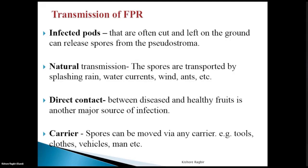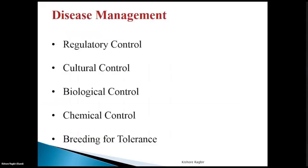There are five points for disease management: regulatory control, cultural control, biological control, chemical control, and breeding for tolerance. Regulatory control is one of the main ones for managing disease — particularly for preventing the disease from coming into a country like Trinidad and Tobago which does not have it yet.